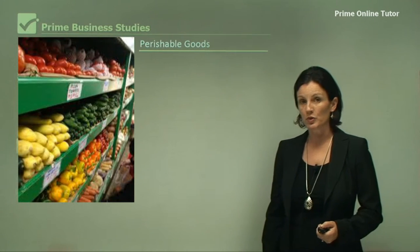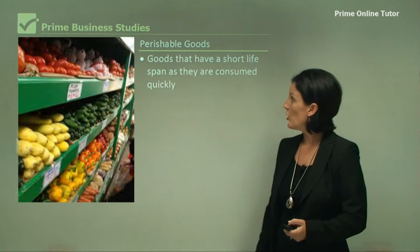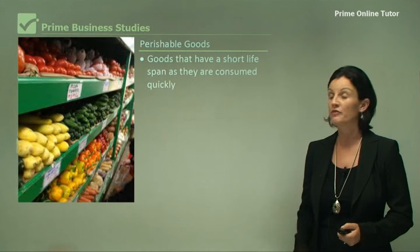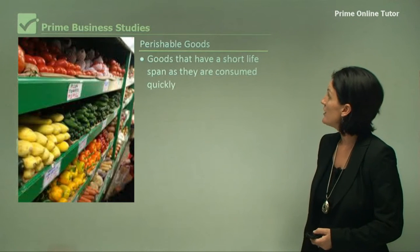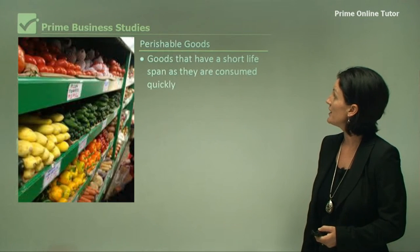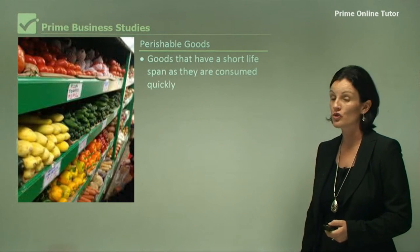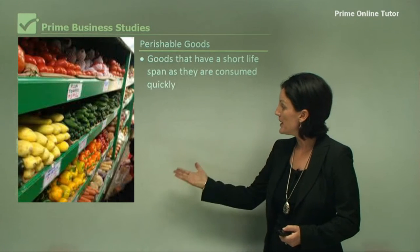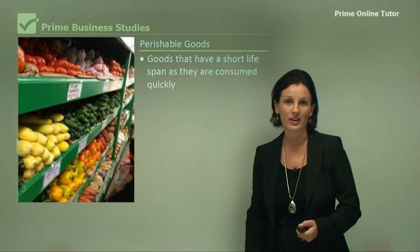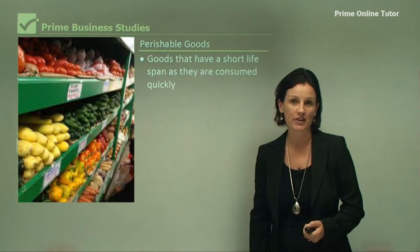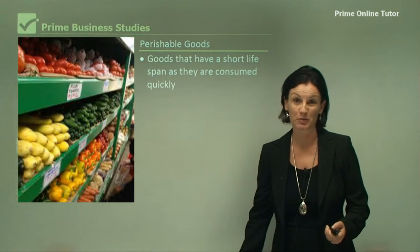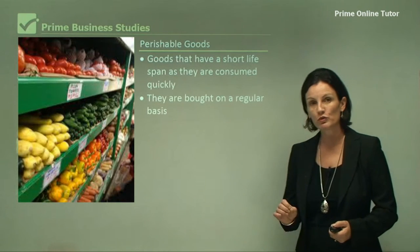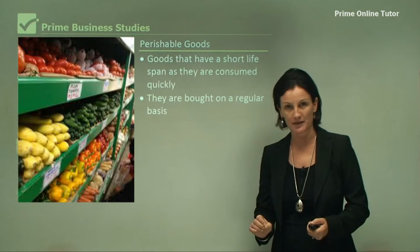Now, perishable goods. We all know perishable goods very well. These are goods that have a short lifespan as they are consumed quickly. The best example of these is fruit and vegetables at the supermarket. They are bought on a regular basis.